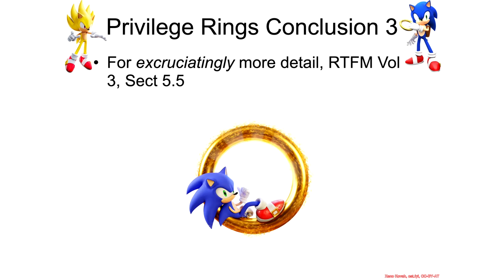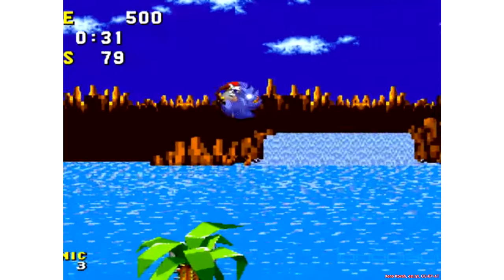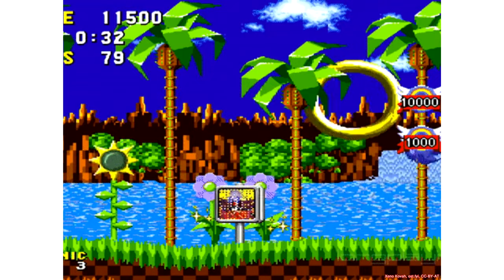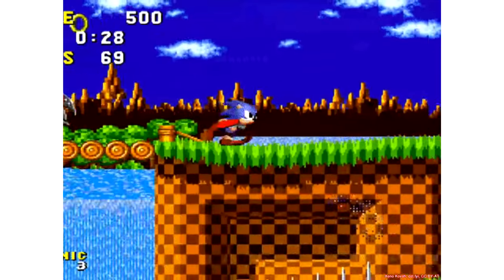There are all sorts of corner cases and details about how all the privilege checks work, so if you really want to know the super details, you can RTFM Volume 3, Section 5.5, where it talks about every little detail. And with that, Sonic has successfully completed his journey trying to find how privilege rings work and collecting this amazing giant ring. Boom.